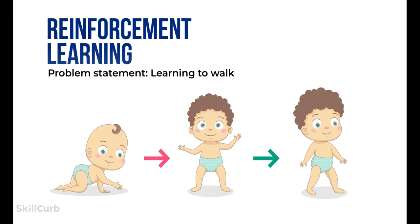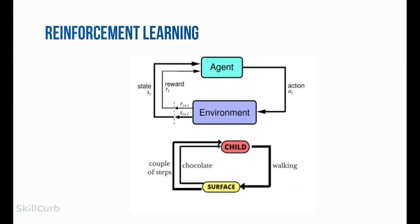Let's see the technical definitions. The problem statement is how to walk. The child is the agent that must learn this. The environment is what the agent learns from — noticing people around them. The action is walking, and each step is a new state. For achieving each step, the agent gets a reward such as a treat. Failing to progress to the next state results in no treat as punishment.